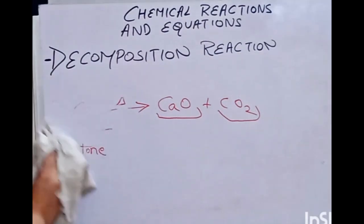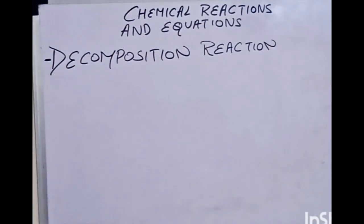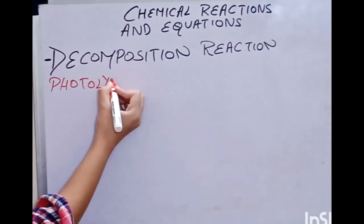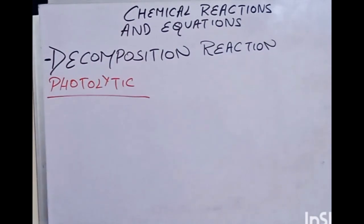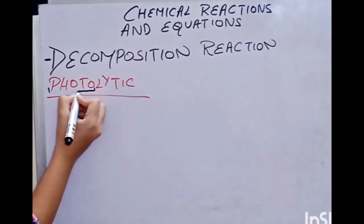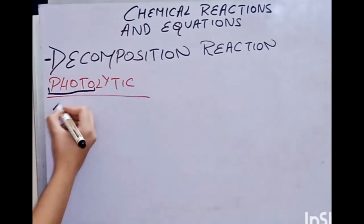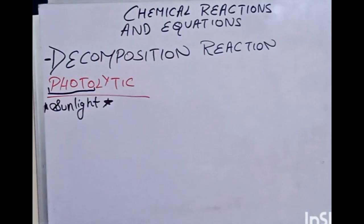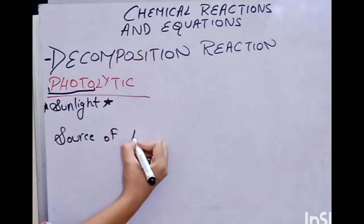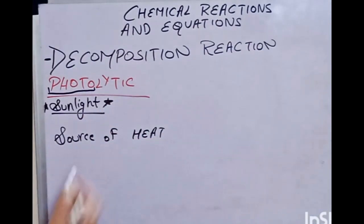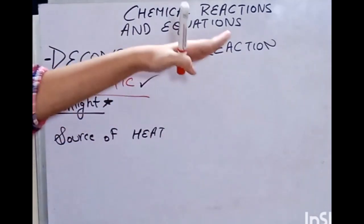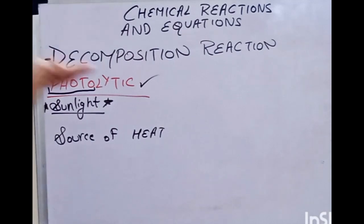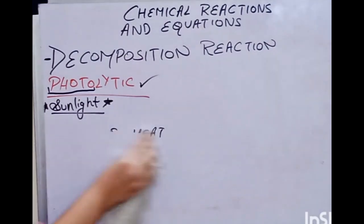Now let's talk about photolytic reaction. When our source of heat is sunlight, we call it a photolytic reaction — or photolytic decomposition reaction. This is mostly endothermic. So photolytic means sunlight is the source of heat. We need heat for decomposition, and in photolytic decomposition, sunlight is that source.